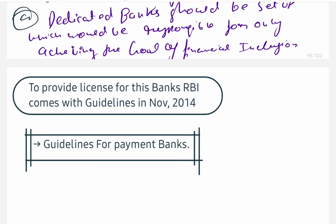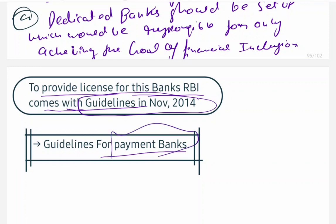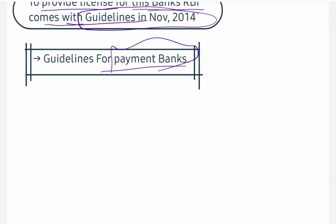Now let's see the license guidelines provided for Payment Banks. RBI came with guidelines in 2014 to provide licenses for Payment Banks. There were at least 10 to 11 guidelines. We will see all of them one by one. The first: minimum capital investment is 100 crore rupees.